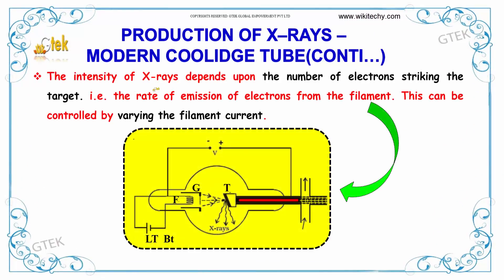The intensity of X-rays depends upon the number of electrons striking the target, as well as the rate of emission of electrons from the filament. This can be controlled by varying the filament current.